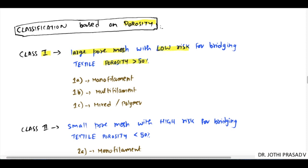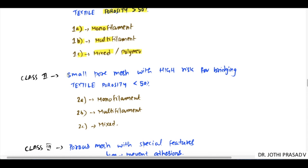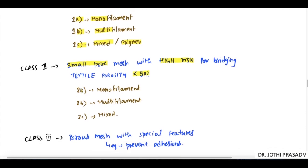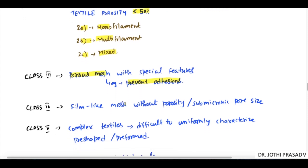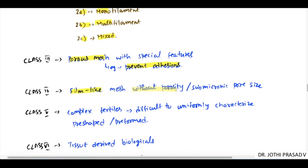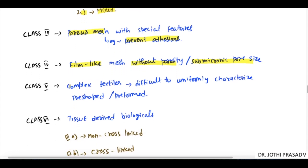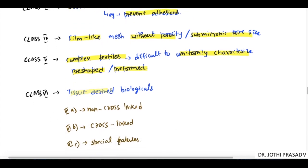Another classification based on porosity: Class 1 is large pore mesh with low risk of bridging where textile porosity is greater than 50%, subdivided into Type 1A monofilament, 1B multifilament, and 1C mixed or polymer. Class 2 is small pore mesh with high risk of bridging and porosity less than 50%, again subdivided into A monofilament, B multifilament, and C mixed. Class 3 is porous mesh with special features to prevent adhesions. Class 4 is film-like mesh without porosity or submicronic porosity. Class 5 is complex textiles difficult to uniformly characterize, such as pre-shaped or pre-formed meshes. Class 6 is tissue-derived or biological mesh: A is non-crosslinked fibers, B is crosslinked, and C is special features.